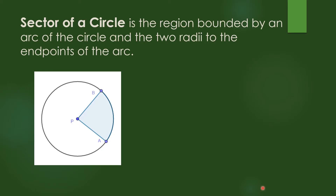Let us identify what is a sector of a circle. It is the region bounded by an arc of the circle and the two radii to the endpoints of the arc. On this figure, we have the two radii, which are PB and PA, and the arc BA. The region here is called a sector of a circle.